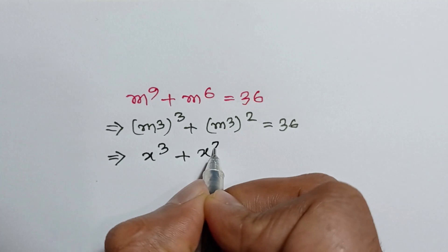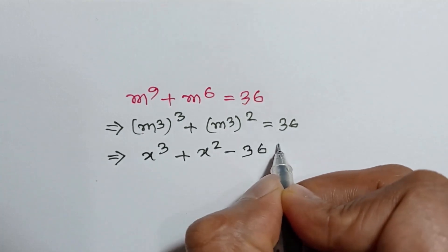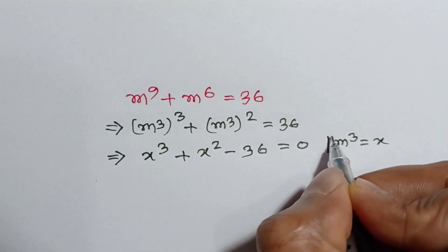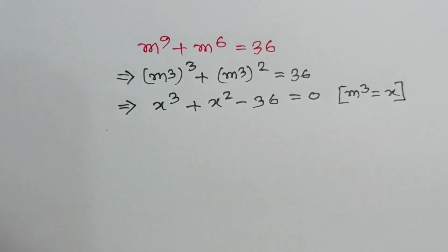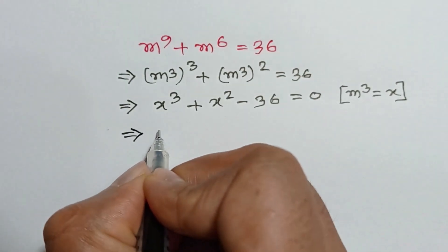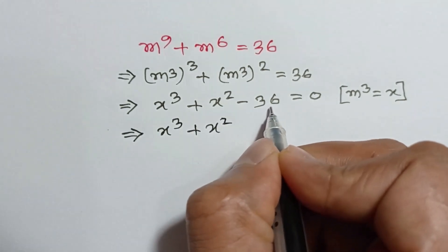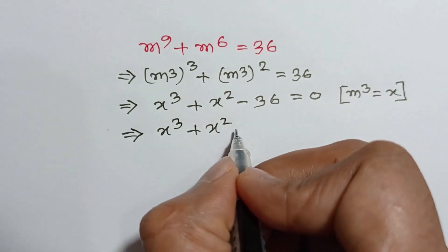We get x cubed plus x squared minus 36 is equal to 0. Here, the nearest cubic number to 36 is 27.